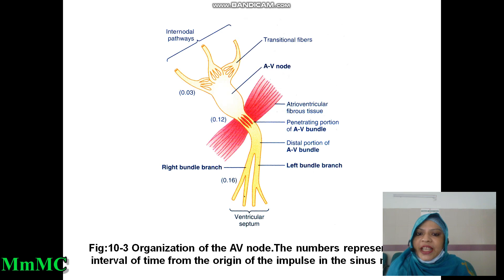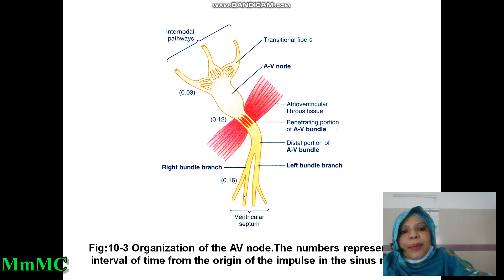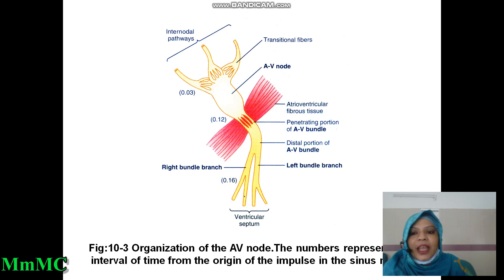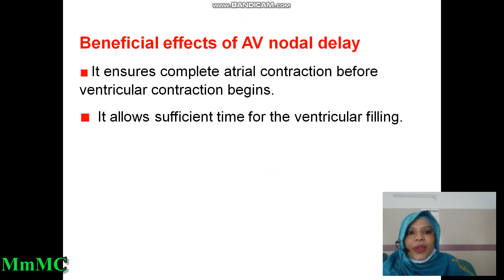You have to draw the figure from your textbook — Guyton and Hall 13th edition — in your exam. From SA node to AV node, time required is 0.03 seconds. The AV node itself takes 0.09 seconds. From AV node to the penetrating portion of the AV bundle, it takes 0.04 seconds. Summing these gives 0.16 seconds. Remember to draw this figure.